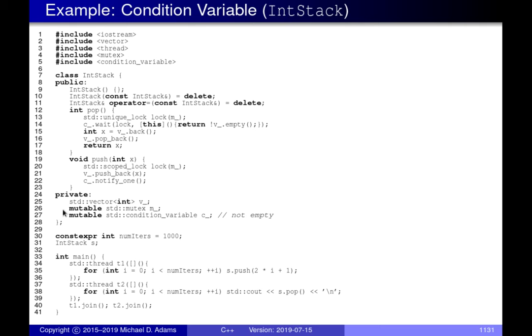The only legitimate use case for the mutable keyword in this context is for mutexes and condition variables. Looking at the pop function: the very first thing we do is acquire our mutex M using a unique_lock — so that if an exception is thrown, we don't forget to release it. After the constructor returns, we've acquired M, so it's safe to access vector V. We use the wait operation on our condition variable to sleep instead of spinning, rather than looping asking 'is there something on the stack?'